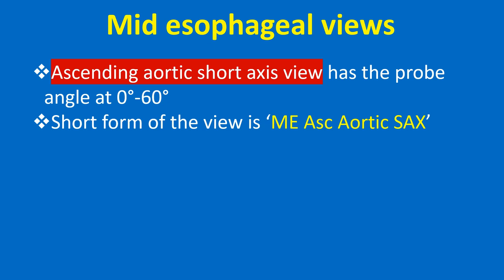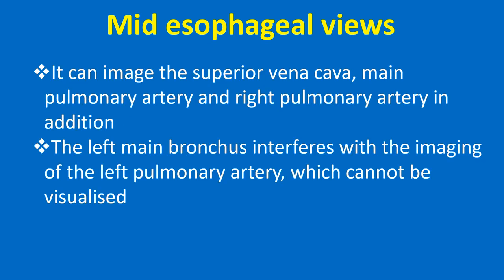The ascending aortic short axis view has the probe angle at 0-60 degrees, known in short as ME S Aortic SAX. It can image the superior vena cava, main pulmonary artery, and right pulmonary artery in addition.